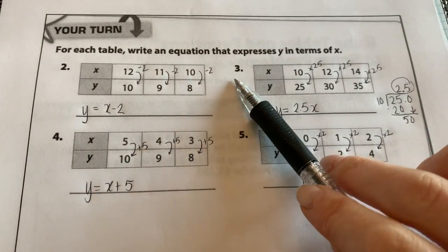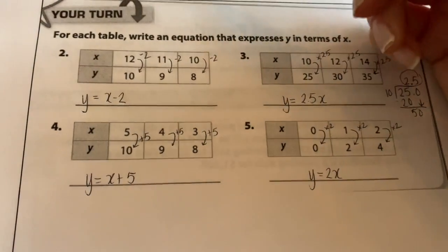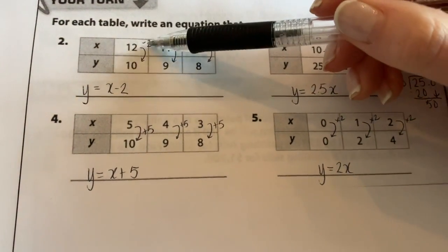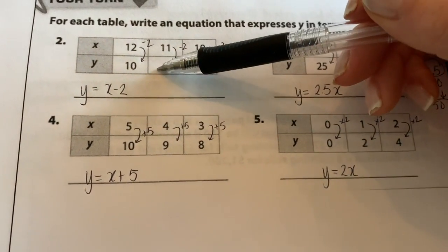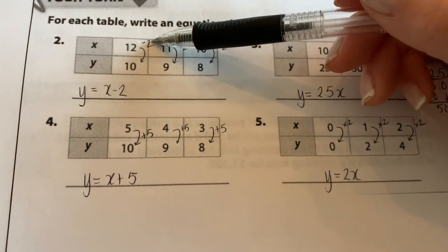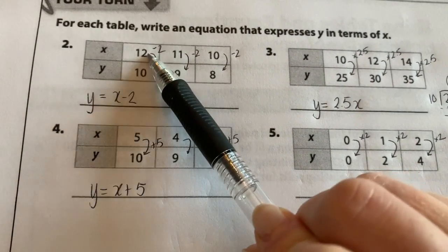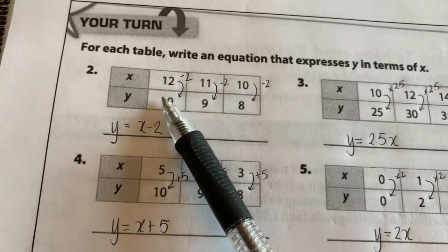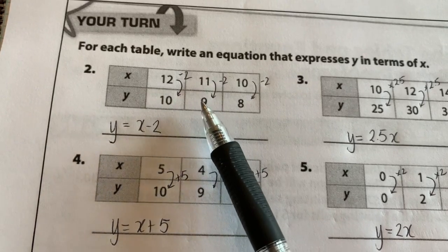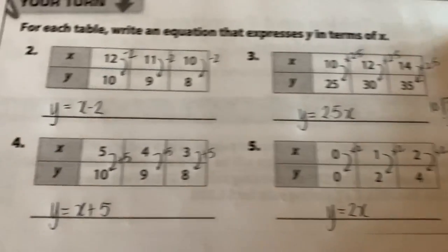Number 3 may have given you a little bit of a problem, but I'm going to talk about how you can figure that out easily. Number 2, when you look from x to y, you can see that you can get each of these y values by subtracting 2 from x. So your equation is going to be y equals x minus 2. Take your x and subtract 2 each time and you get the y value.